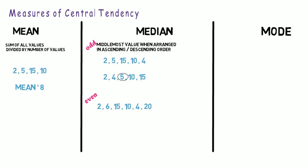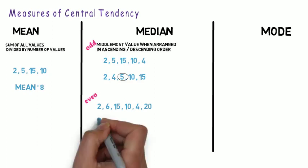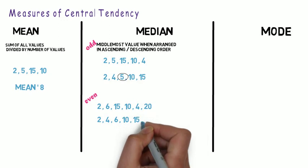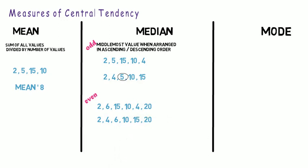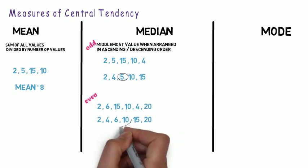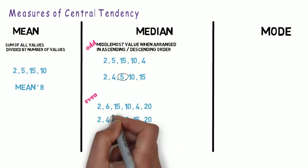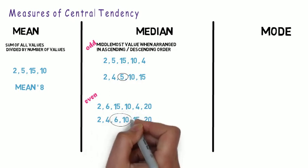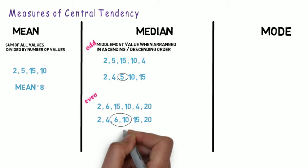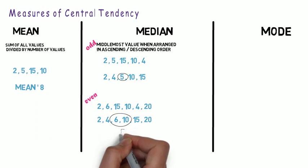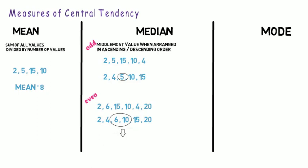What if the number of values is even, like 2, 6, 15, 10, 4 and 20? Arrange the values in ascending order: 2, 4, 6, 10, 15, 20. Find the middle 2 values — in this case 6 and 10 — and find the mean of those 2 middle values. That is, 6 plus 10 divided by 2 equals 8. So the median is 8.